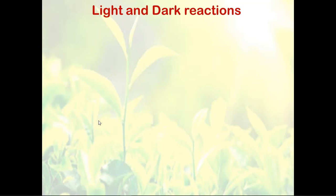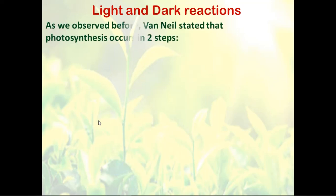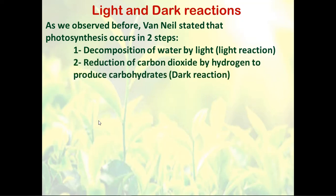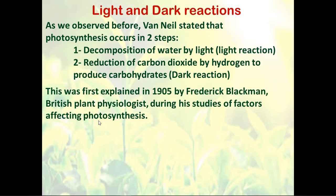So let's go to the light and dark reactions. Van Niel stated that the photosynthesis process occurs in two steps. The first is the decomposition of water by light, called the light reaction. The second is the reduction of carbon dioxide by hydrogen to produce carbohydrate, called the dark reaction. When we say dark reaction, it doesn't mean we need darkness — it means we don't need light. This was first discovered by Frederick Blackman in 1905, a British physiologist studying factors affecting photosynthesis.